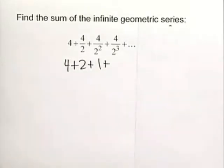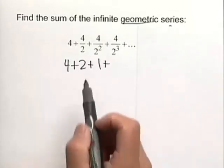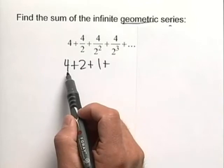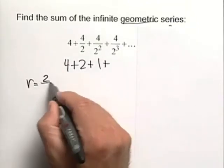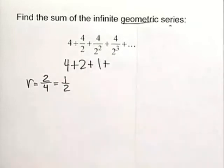And again it's important to recognize that we do in fact have a geometric series here. In order to find the ratio we're going to take a sub 2 divided by a sub 1, so our common ratio r is equal to 2 over 4, which is equal to 1 half.